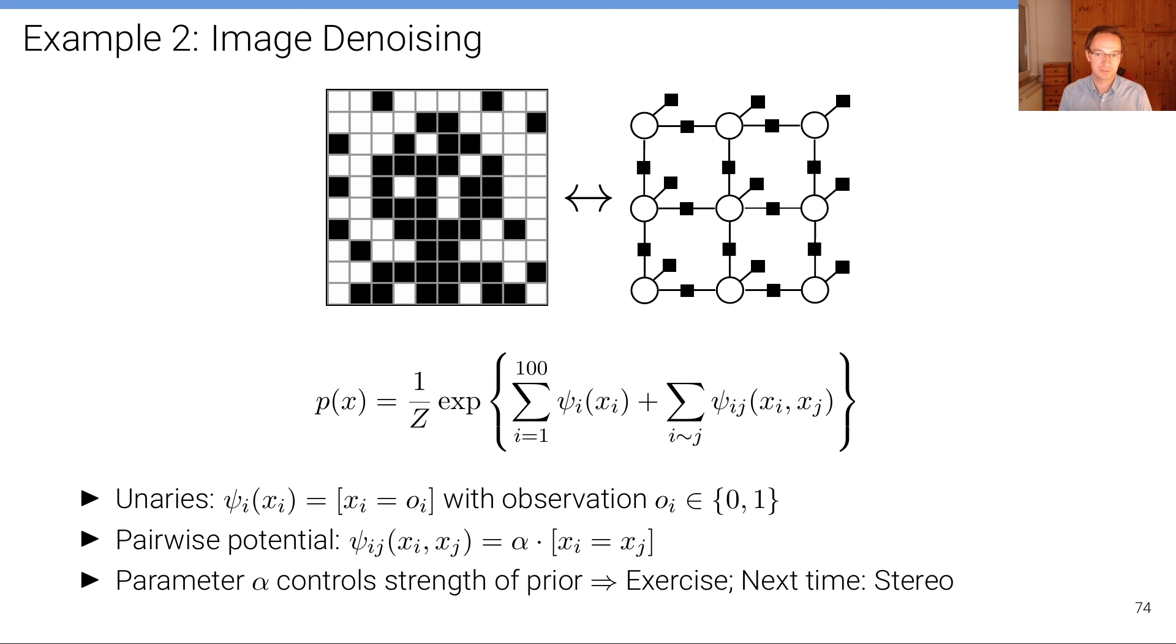And then next time we're going to talk about how these graphical models are used in more advanced problems like stereo estimation and so on, with larger label sets or multi-view reconstruction where you have also larger potentials, potentials beyond pairwise potentials. So let's stop here. Thanks.